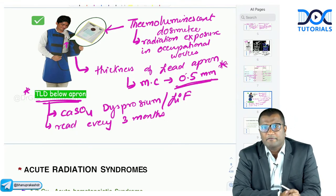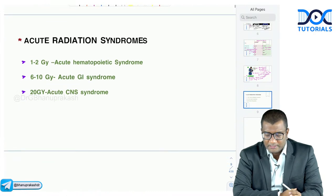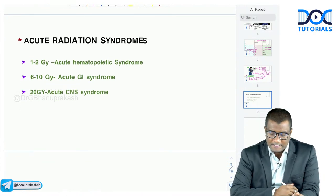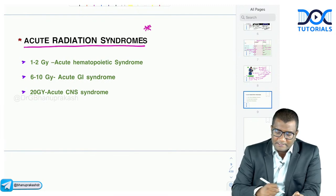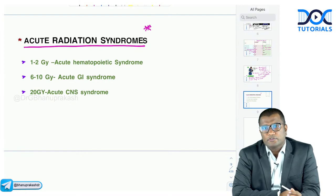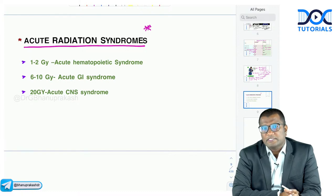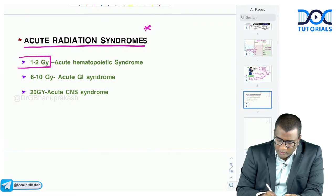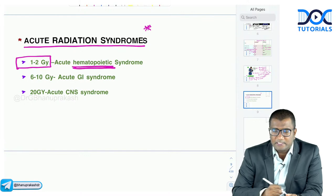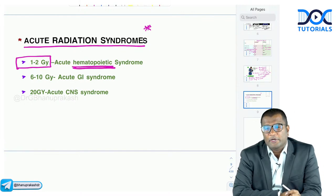Coming to acute radiation syndromes — these occur when exposed to a large dose of radiation, not in routine diagnostic radiology, but in nuclear accidents, instrument malfunctions, or high-dose cancer treatments. When exposed to more than 1–2 gray, bone marrow (the most radiosensitive tissue) is affected first — this is hematopoietic syndrome, with onset after a few months since circulating RBCs persist initially.